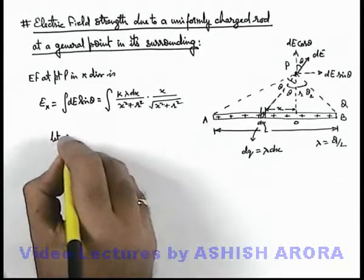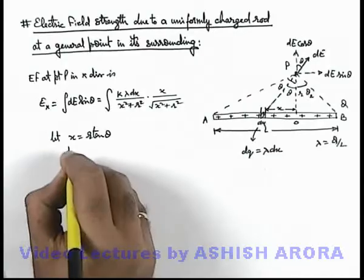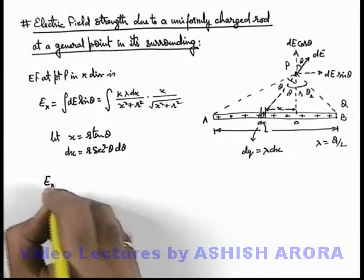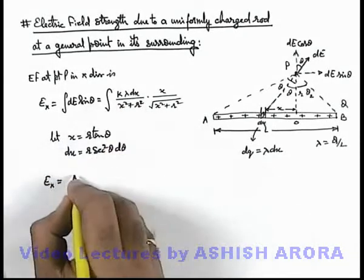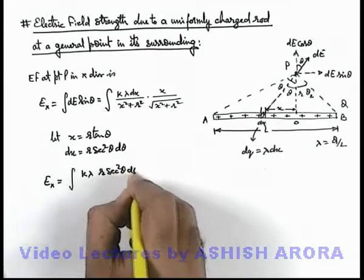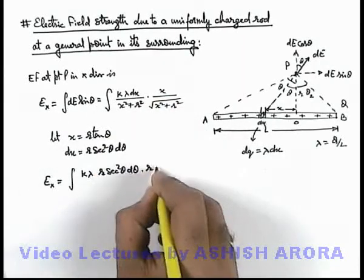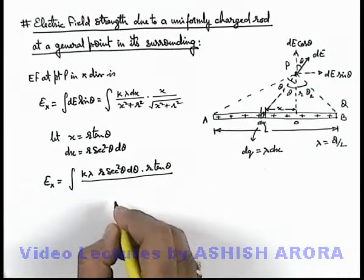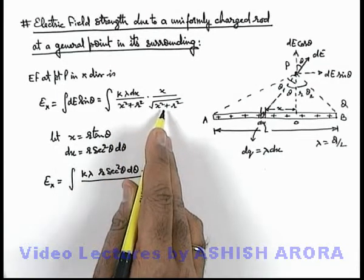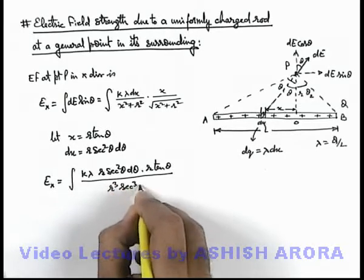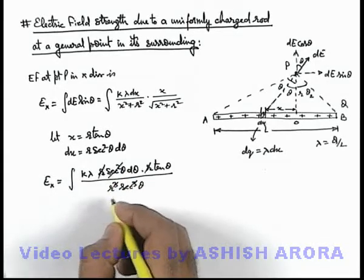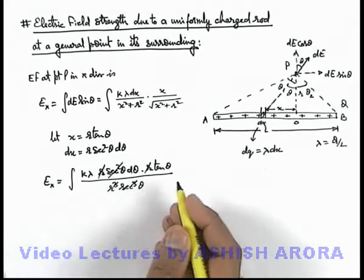So here we let x equal r·tan(theta), which results in dx equal to r·sec²(theta)·d(theta). Substituting the values, we get Ex as the integration of k·lambda, where dx is written as r·sec²(theta)·d(theta), multiplied by x written as r·tan(theta), divided by (x² + r²) to the power 3/2, which becomes r³·sec³(theta). Now r gets cancelled out, sec²(theta) gets cancelled out, and sine(theta) is left over because tan(theta) divided by sec(theta) equals sine(theta).